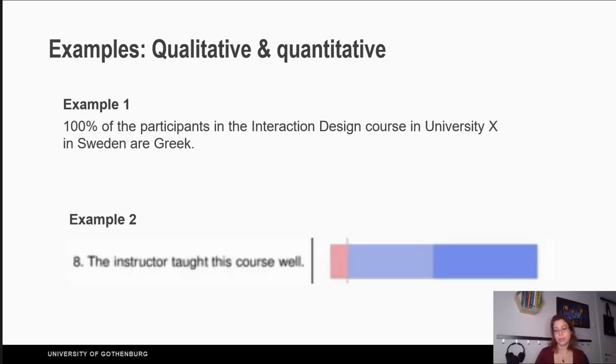Another example that quantitative data are not sufficient is when you give feedback. For example, here we see a question: the instructor taught this course well. There were some people that said no with the red, some people that said okay, some people that said very well. This as an instructor doesn't give me any value. I would need to know what I did wrong in order to fix it. So in that case it probably would have been better to use qualitative research.